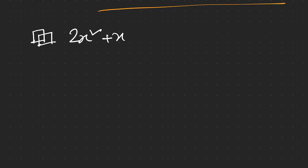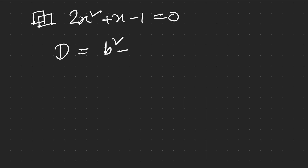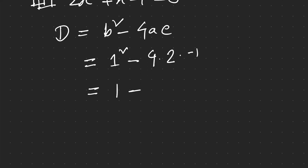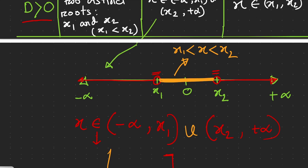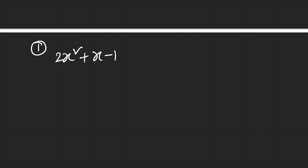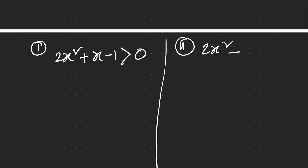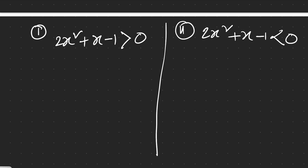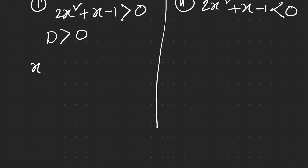Now let's solve the problem to understand how we handle a real case. Our equation is 2x² + x − 1 = 0. The discriminant D = b² − 4ac = 1² − 4(2)(−1) = 1 + 8 = 9. Since 9 is positive, D > 0. So we are in the third case. In the exam you might be given: find x for 2x² + x − 1 > 0, or for 2x² + x − 1 < 0.